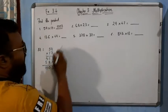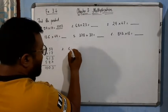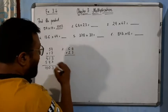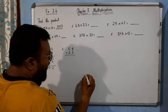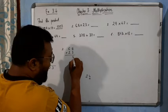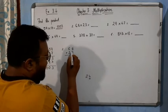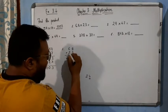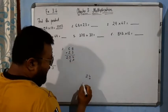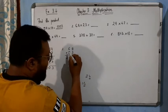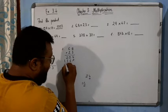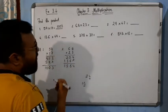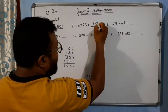Now come to the next one — question 2. Here 68 is multiplied by 23. 3 times 8 is 24, so we write 4 and carry 2. Then 3 times 6 is 18, plus 2 is 20, so we write 20. Now 2 times 8 is 16, write 6 carry 1. Then 2 times 6 is 12, plus 1 is 13. So the answer will be 1564.